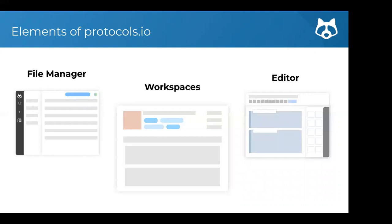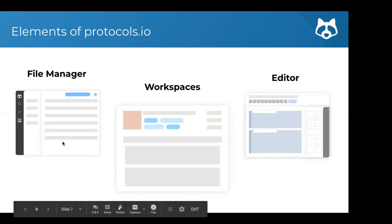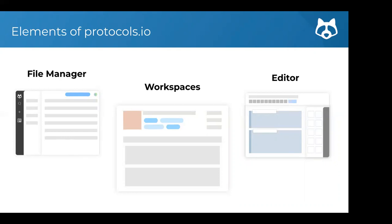The protocols.io platform is really structured around three main parts. One is our file manager — this is where all your files and protocols are stored and where everything happens. Next are workspaces — if you're collaborating with others, you'll do that through workspaces. And then there's our editor — when you're creating protocols, you'll do that through the editor. Today I want to quickly touch on all three of these elements.